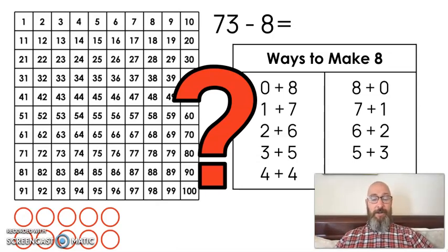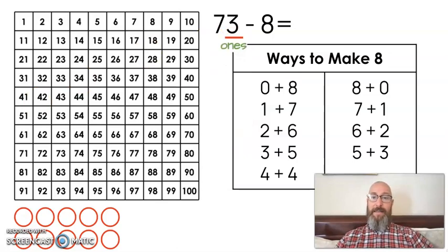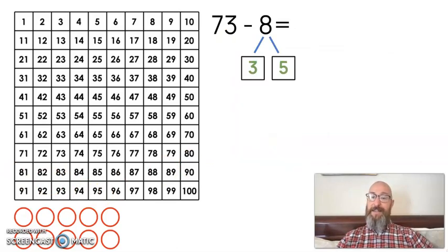How do I know how to break apart 8 to make solving this subtraction equation a little bit easier? Just like we did last time, we're going to look at the ones place of the minuend, the ones place of the larger number, and we see a 3 there. You should be guessing 3 plus 5 because we have a 3 in the ones place. So 3 and 5 are going to be the way we break up 8.